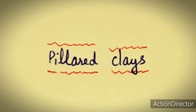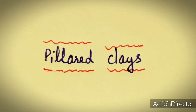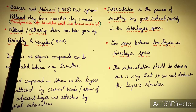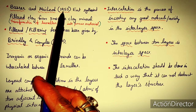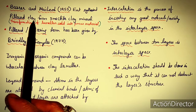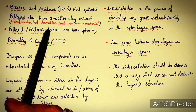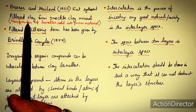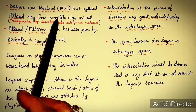Dear students, today we will learn about pillared clays — what they are, their uses, and how we can synthesize them. Barrer and MacLeod in 1955 first synthesized these clays. The name 'pillared' was not given at that time, but they synthesized a different type of clay from smectite clay mineral, transforming a lamellar solid into a porous material.